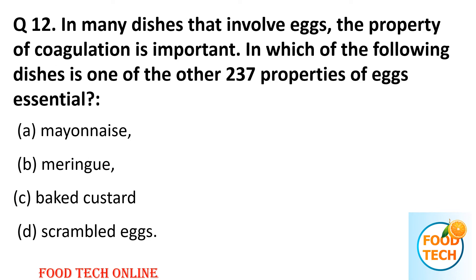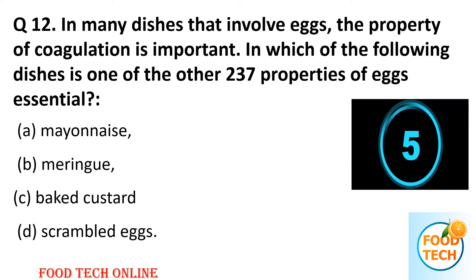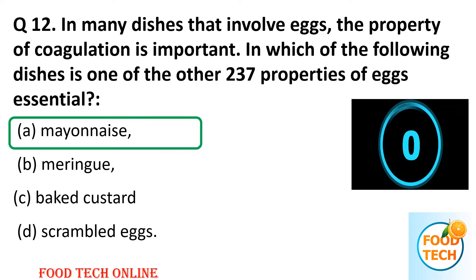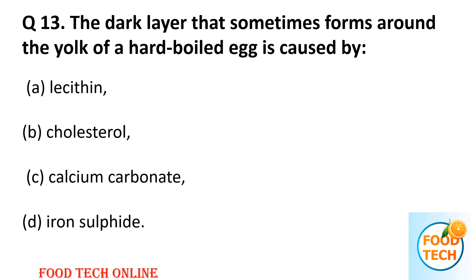Question 12: In many dishes involving eggs, the property of coagulation is important. In which of the following dishes is one of the other properties of eggs essential? A: mayonnaise, B: meringue, C: baked custard, D: scrambled eggs. Answer: A, mayonnaise; B, meringue.